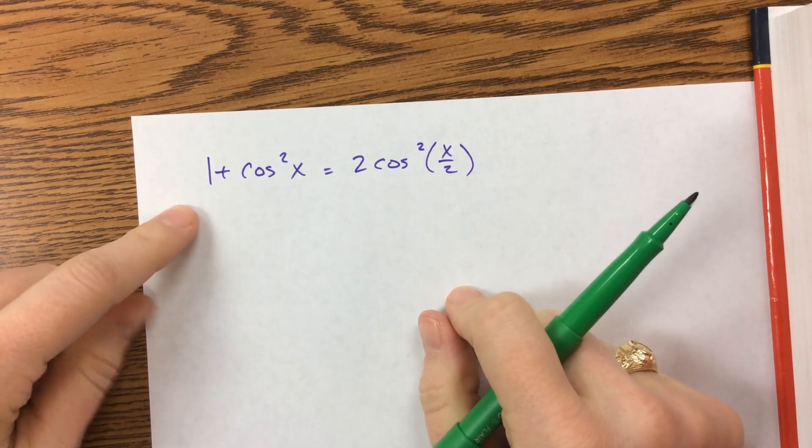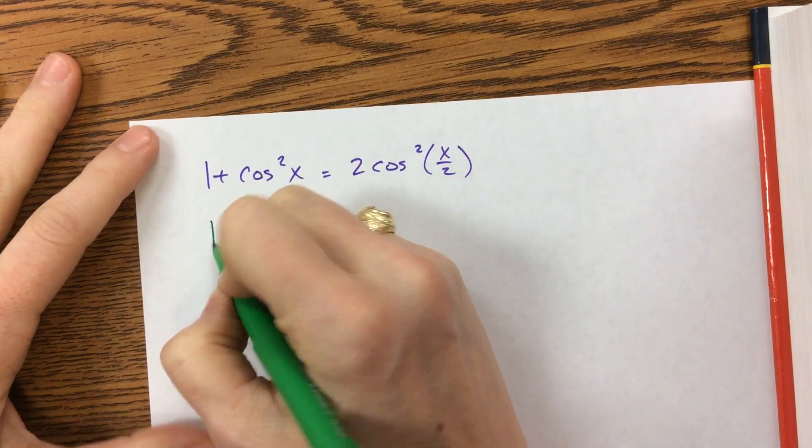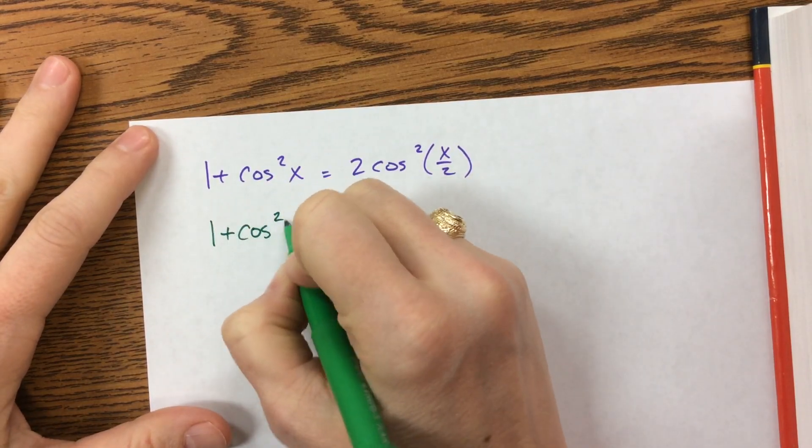So reading it out, it's 1 plus cosine squared x equals 2 cosine squared x over 2. So what we're going to do is we're going to use our half-angle identity.